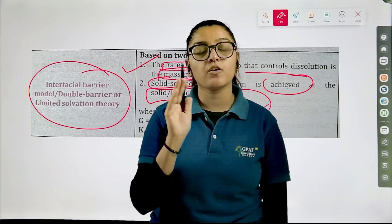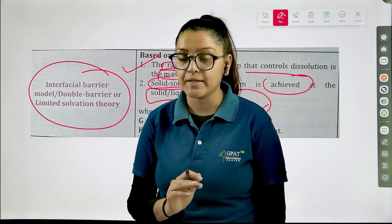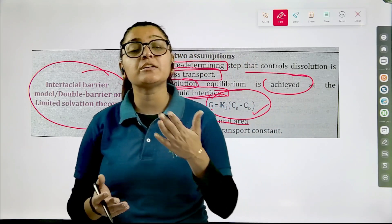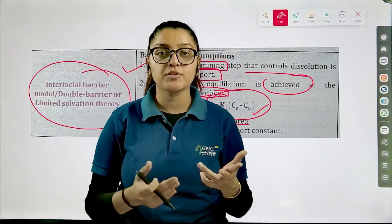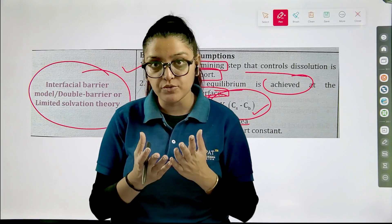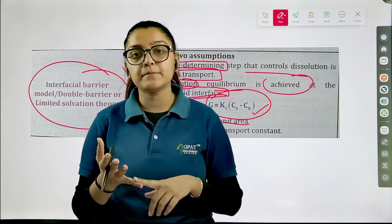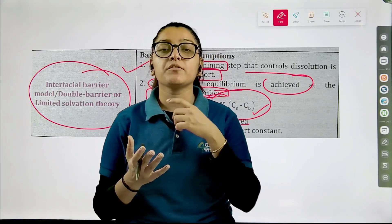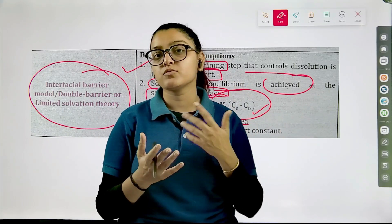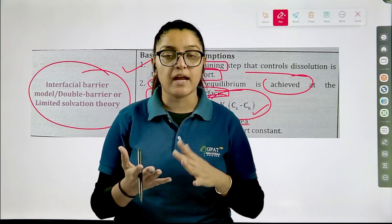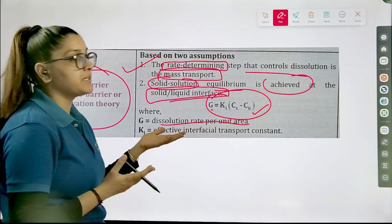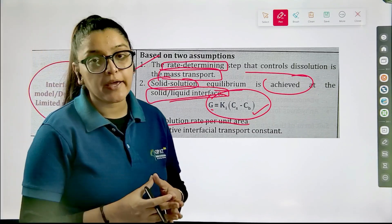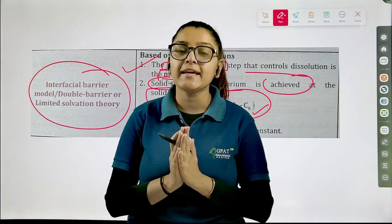So we have three theories for drug dissolution. All the names and basic processes are important — just glance at them and try to memorize the Noyes-Whitney equation. In film theory we have formation of a stagnant layer and diffuse layer. In the surface renewal theory, packets of solvent come from the bulk media with no concentration gradient as the driving force. In the interfacial barrier theory, the key process is the solid-solution interaction at the interface. Thank you so much, we will meet in the next video.